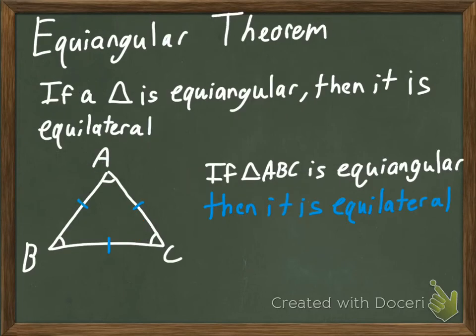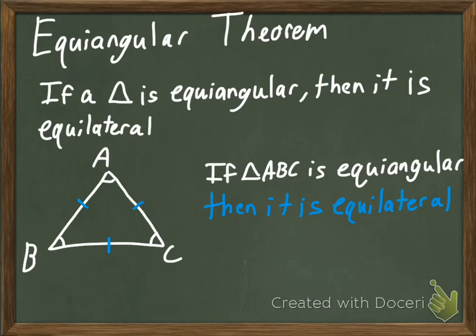Next, we have the Equiangular Theorem — it's kind of like the converse of the Equilateral Theorem. It says that if a triangle is equiangular, then it is equilateral. So if we start off by saying triangle ABC is equiangular, then we can say that it is also equilateral. They're like reverses — like a converse of each other.